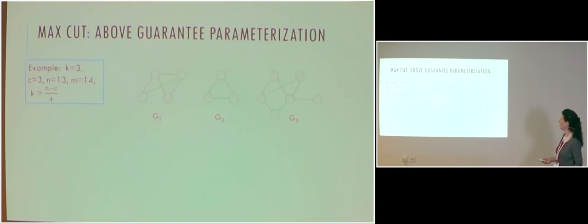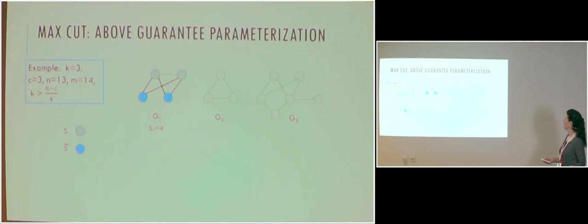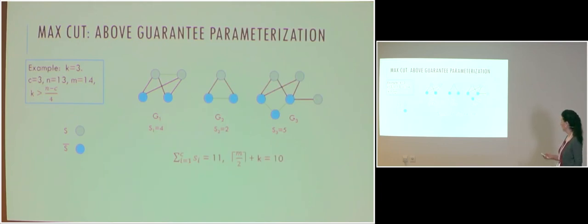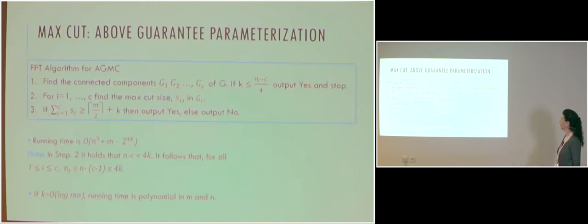Here is an example where K is equal to 3 and we have three connected components. K is larger than (n minus c) over 4, so we proceed to the second step. We find the max cut in each connected component, and the sum of the sizes of the cut is 11, while m over 2 plus K is equal to 10. So this is a yes instance.